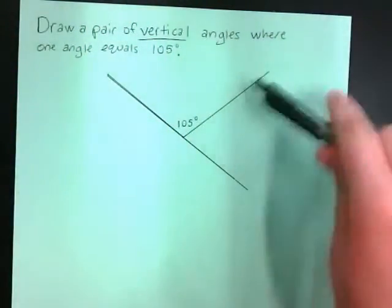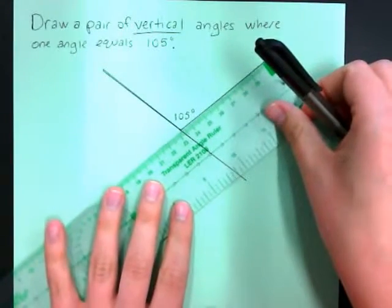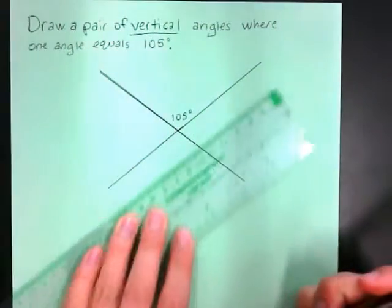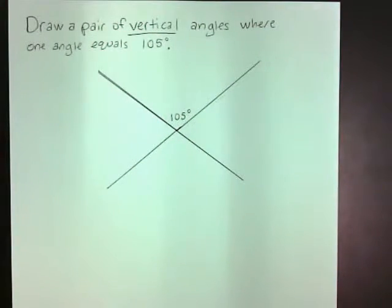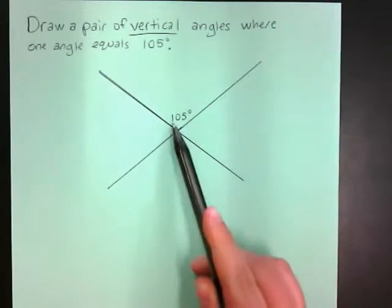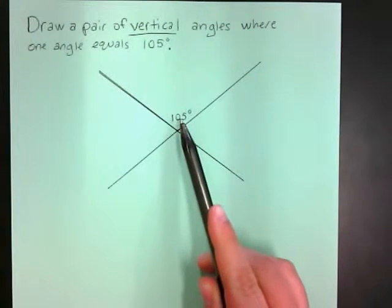And then I'm going to do the same to the other line I had. I'm going to take that, extend my line this way. Okay, and now I have what looks like two lines that are crossing each other, where one of them is 105 degrees.